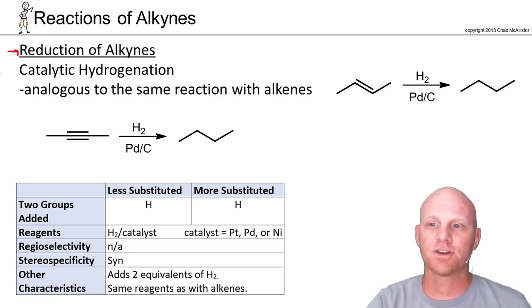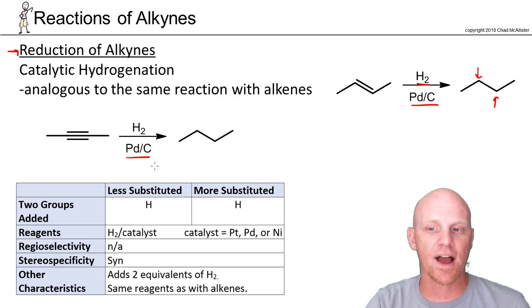We can do catalytic hydrogenation the same way we did with alkenes. With an alkene, you use hydrogen and a metal catalyst, usually platinum, palladium, or nickel, and you add hydrogen to both sides of the alkene, reducing it to an alkane. We can do the same exact set of reagents, H2 and either palladium, platinum, or nickel.